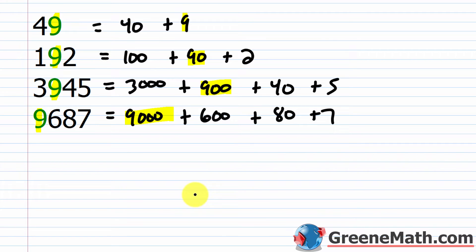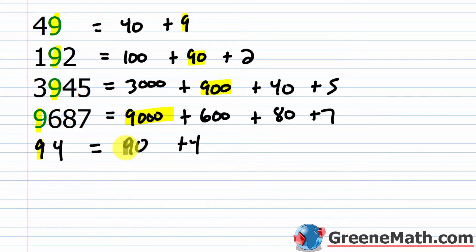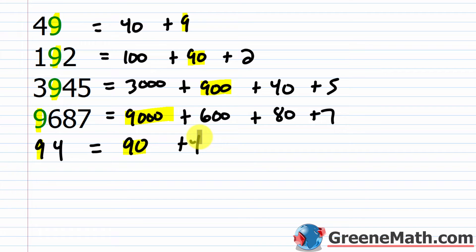As a final example, instead of 49, let's write 94. This is 90 plus 4 — now the 9 is a 90, it's in the tens place, 9 times 10. In 49, the 9 is just a 9, times 1. Notice these numbers are built with the same two digits, a 4 and a 9. But 49 is 40 plus 9, while 94 is 90 plus 4. We know $94 is more than $49, so the position of a digit determines its value.